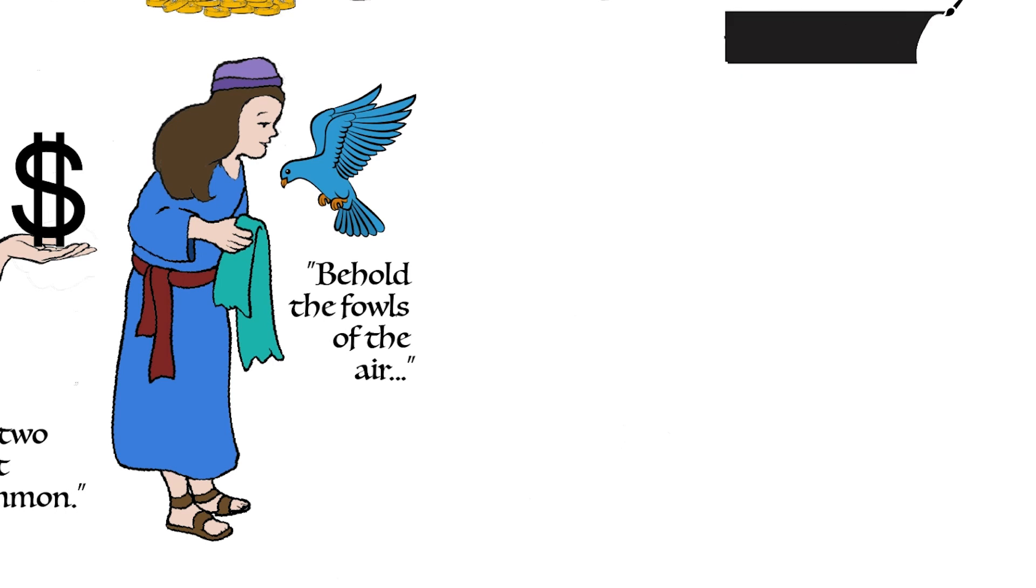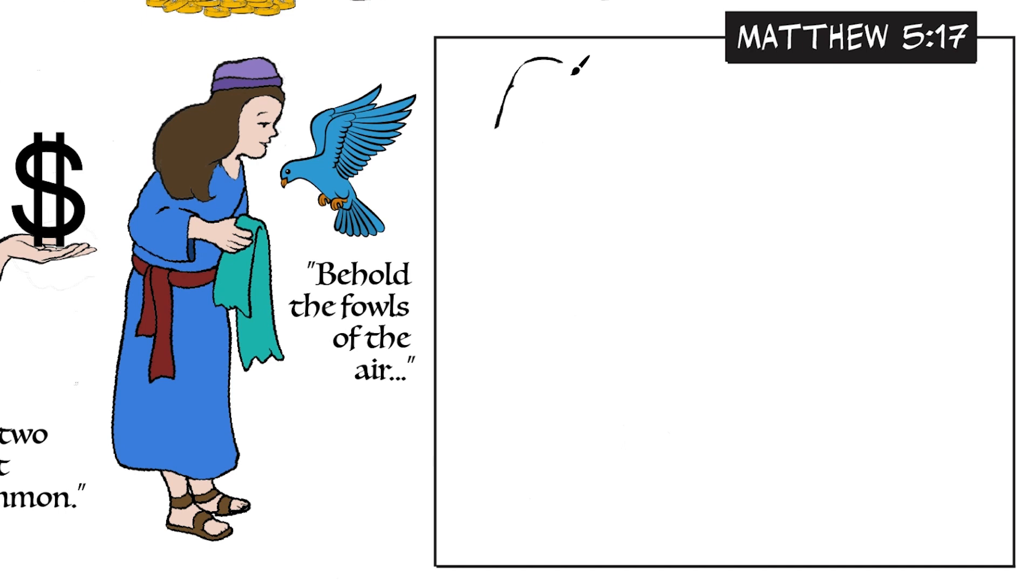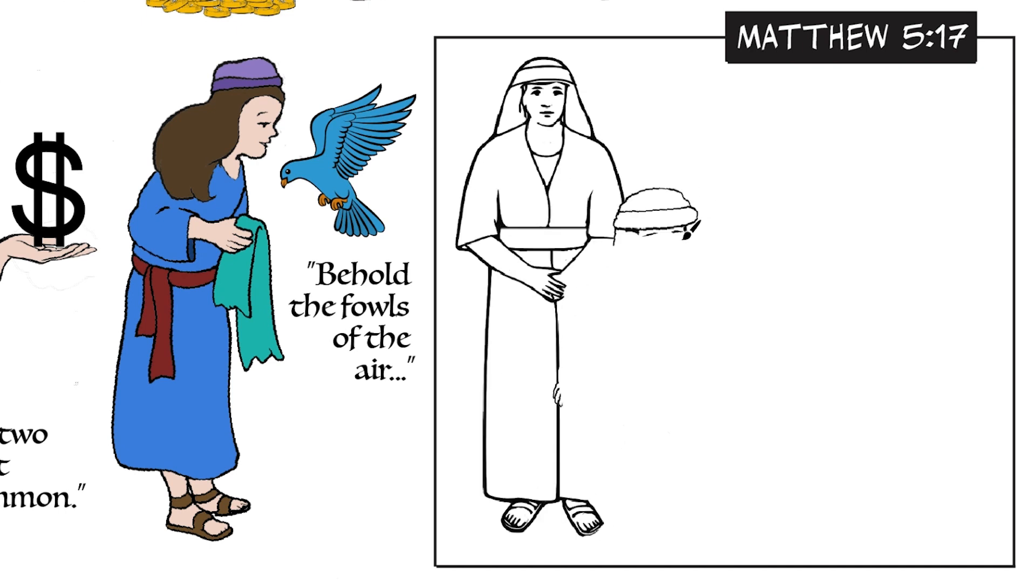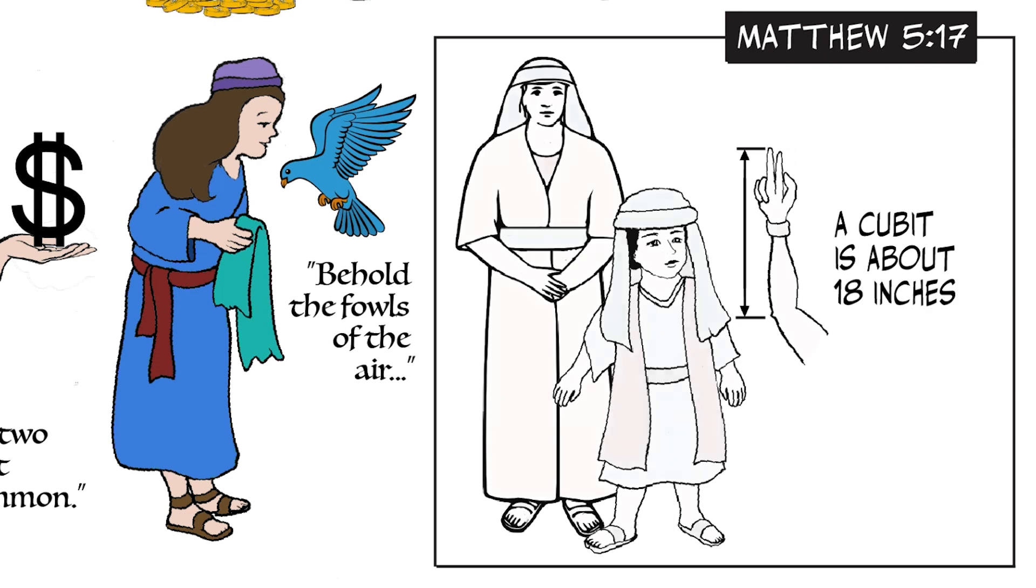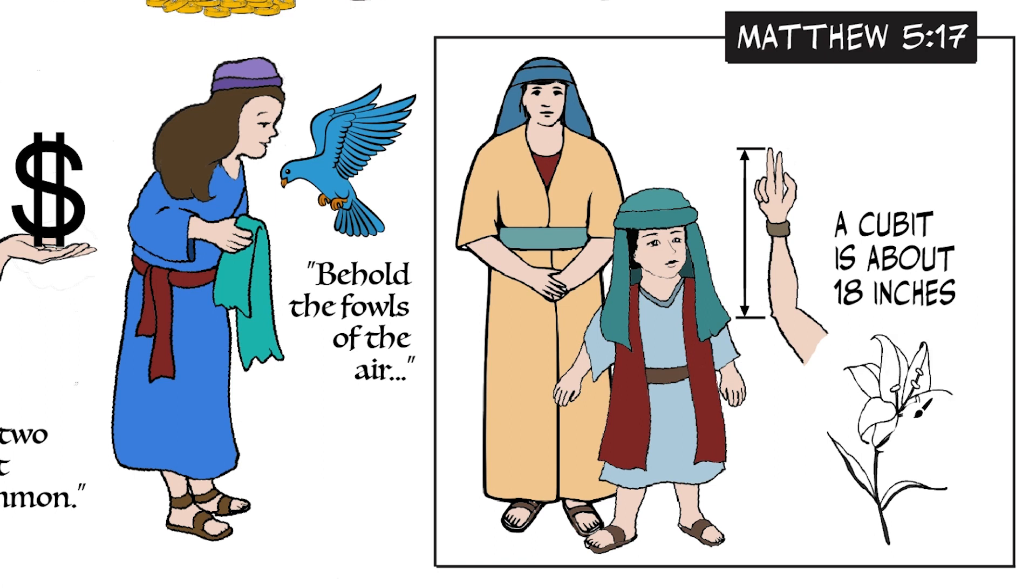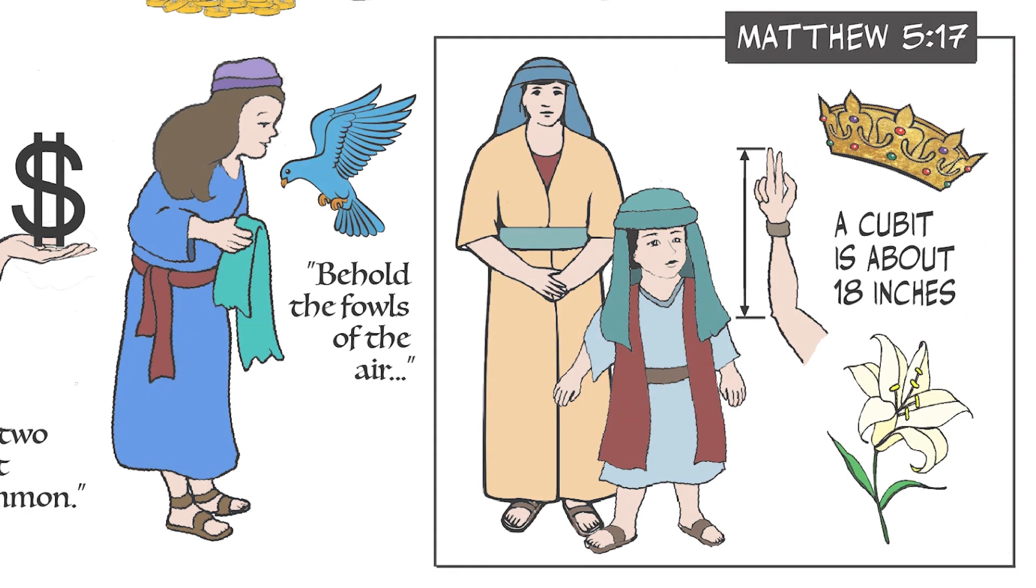The Savior asked which one of us could add one cubit, the distance between our elbow and fingertips or about 18 inches, to our stature or height. He asked why we thought of our raiment or clothing, and said, consider the lilies of the field, how they grow. They toil not, neither do they spin. Not even King Solomon in all his glory was clothed like them.